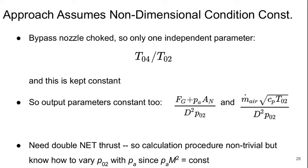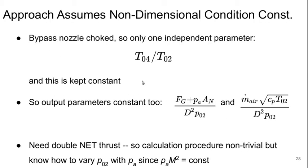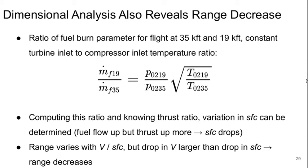This approach assumes that the non-dimensional conditions remain exactly constant. Because our bypass nozzle is choked, there's only one independent parameter governing the behavior of the engine, and that's P0.4 over P0.2. So we're keeping that the same. That means the output parameters, both the one involving thrust and the one involving the flow rate of air, those have to be the same. So we need to double our net thrust. The calculation procedure is actually pretty non-trivial, it's iterative. But we know how to vary P0.2 with P_A since P_A times M squared has to be a constant. Obtaining this plot is actually a non-trivial amount of effort, though a computer code can do it easily.